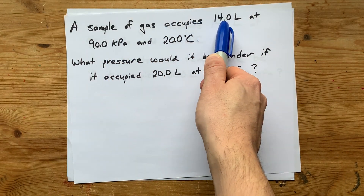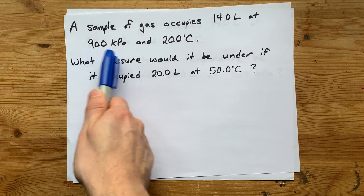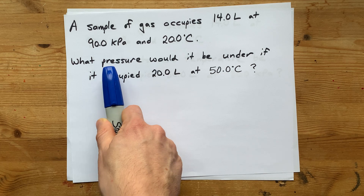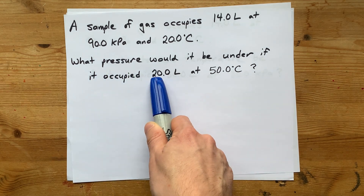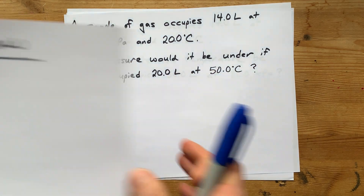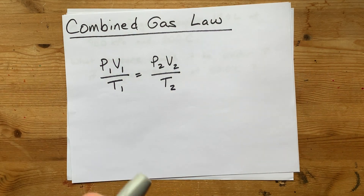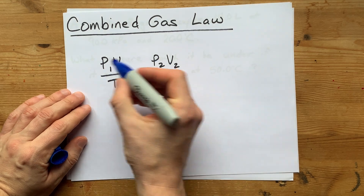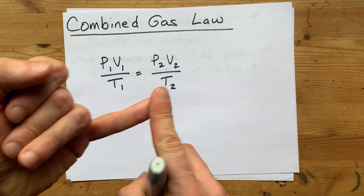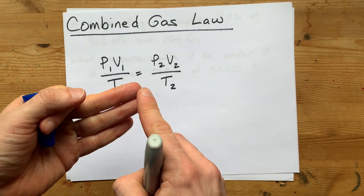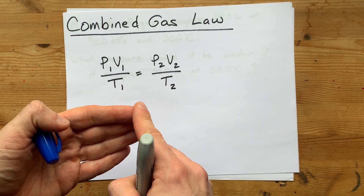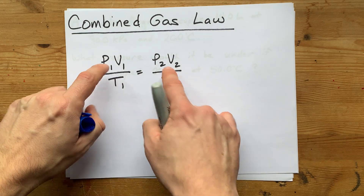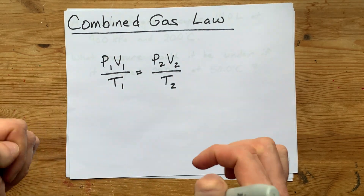A sample of gas occupying 14 liters at 90 kilopascals and 20 degrees Celsius — we want to know the new pressure if it's at a new volume and new temperature. The units you use for pressure don't matter as long as they match. You can use atmosphere, torr, kilopascal, regular pascal, psi. As long as you're using the same units for both, you're going to be okay.